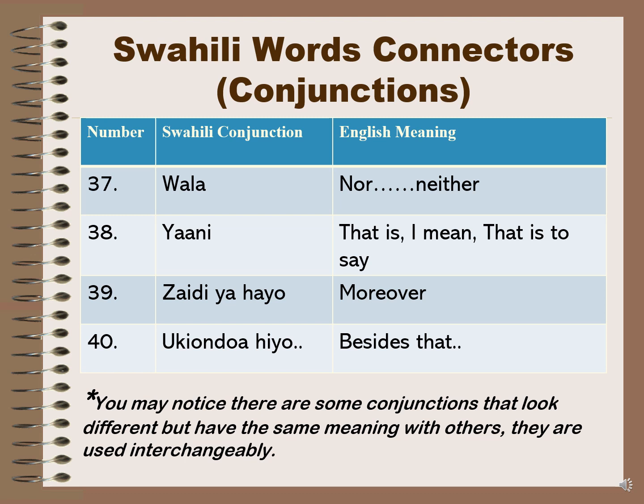Number thirty-seven: 'wala', when used in a sentence, means 'nor' or 'neither -- nor'. Number thirty-eight: 'yaani' means 'that is', 'I mean', or 'that is to say'. Number thirty-nine: 'zaidi ya hapo' is 'moreover'. Number forty: 'ukiondoa hiyo' is 'besides that'. You may notice there are some conjunctions that look different but have the same meaning — they are used interchangeably.